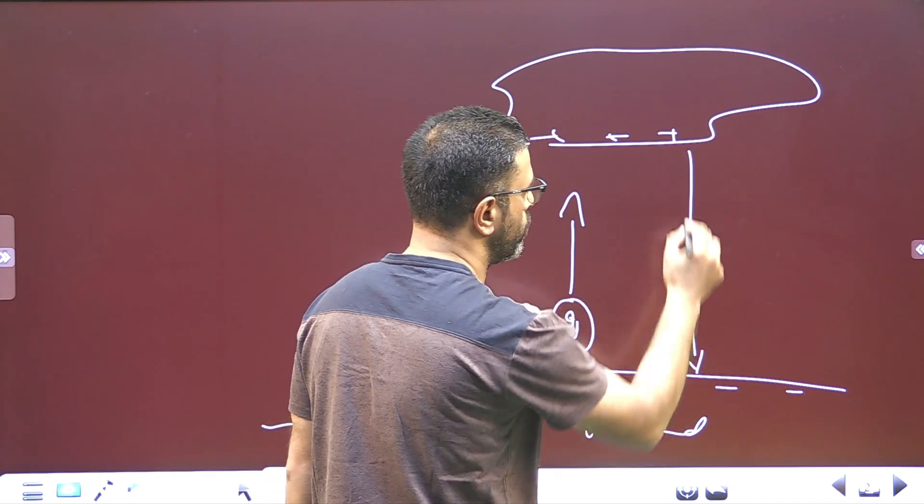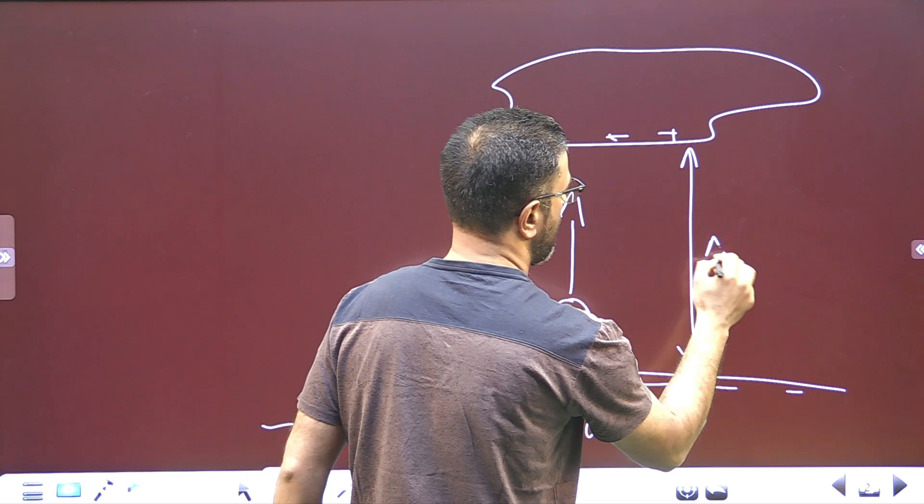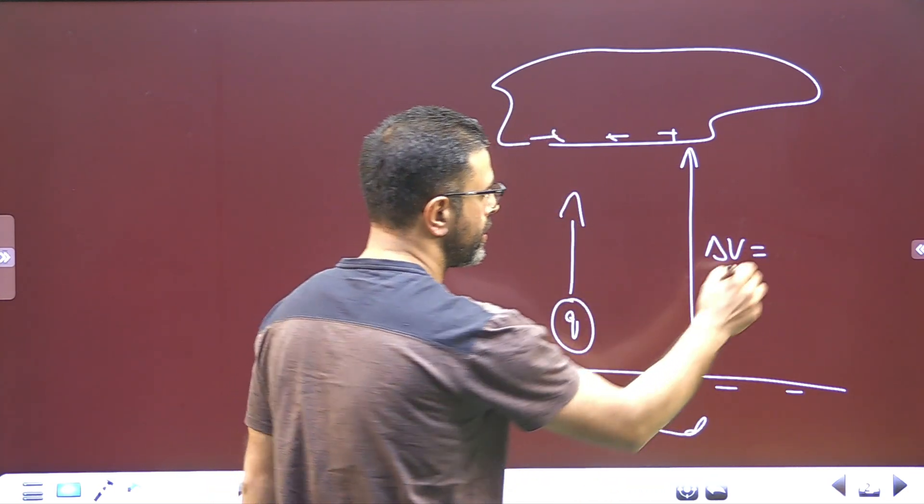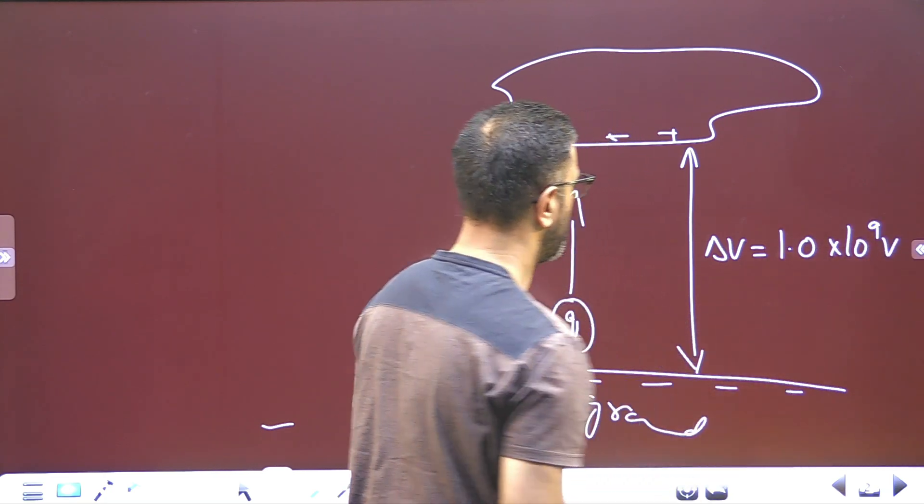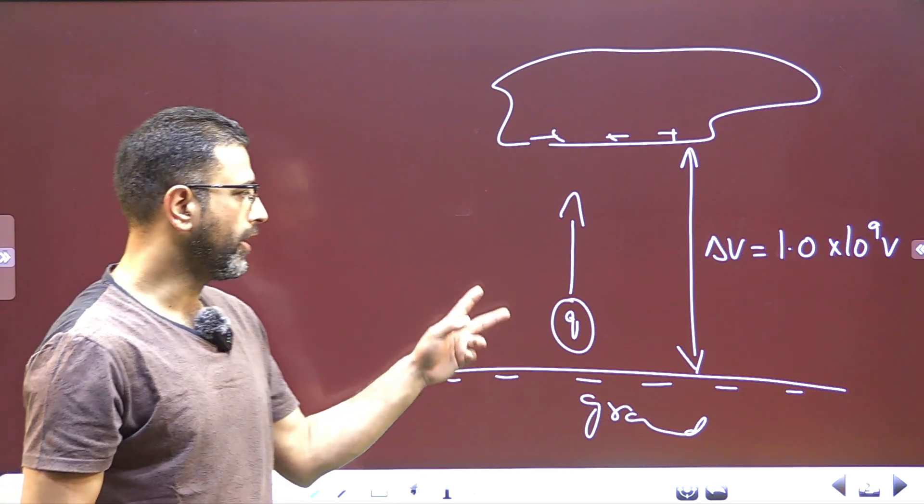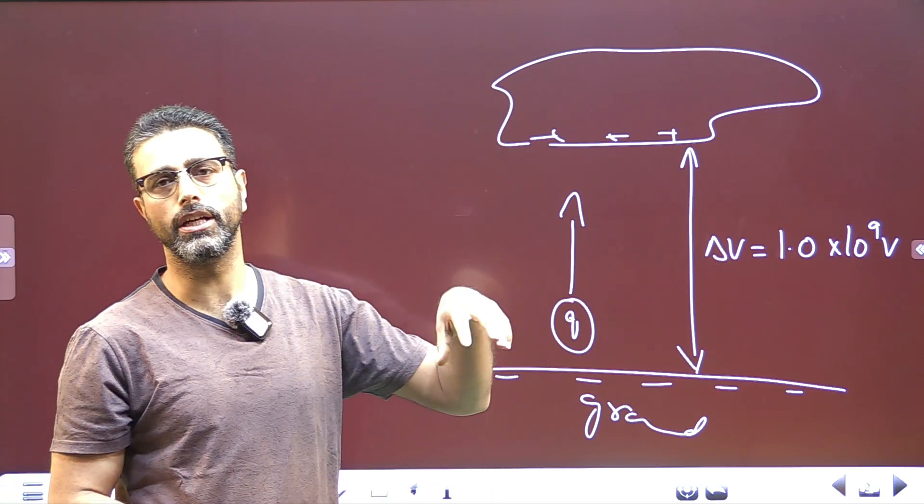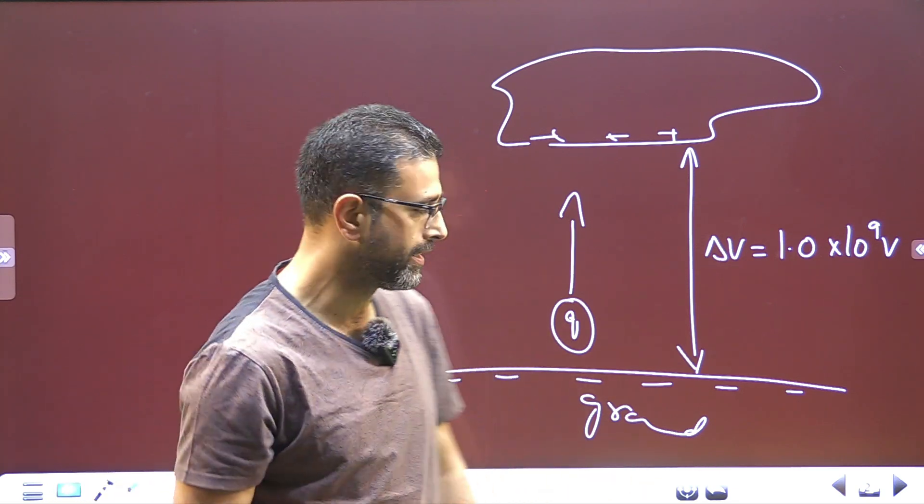Potential difference between the two is given, delta V is equal to 1.0 into 10 to the power 9 volts. First, we have to find out change in energy of this charge. Then, second, all that energy, if used to accelerate a car, thousand kg car, what will be its final speed?